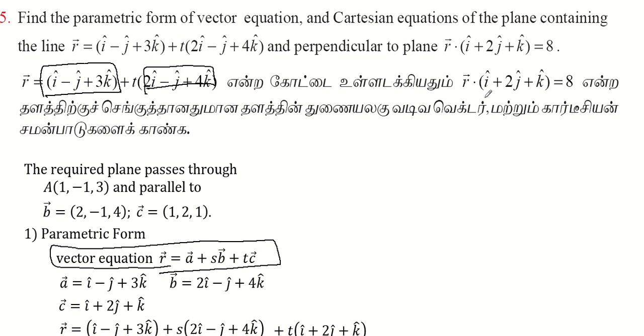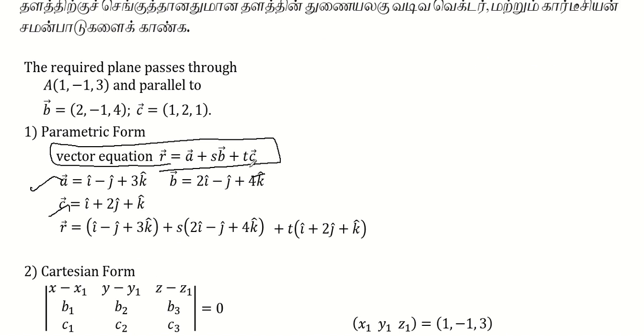And c vector is I vector plus 2j vector plus k vector. Now, r vector is equal to a vector plus sb vector plus tc vector. This is the vector equation. How do you substitute it? Substitute b and c. This is the vector equation.